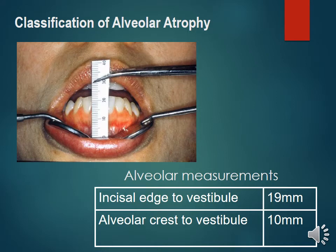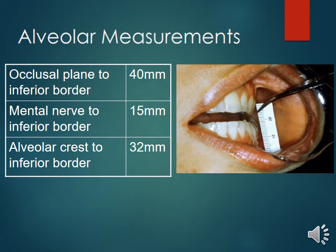Classification of alveolar atrophy includes measurements of: the incisal edge to the vestibule, the alveolar crest to the vestibule, the occlusal plane to the inferior border, the mental nerve to the inferior border, and the alveolar crest to the inferior border.